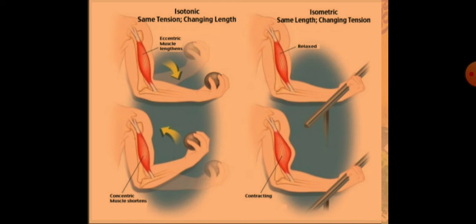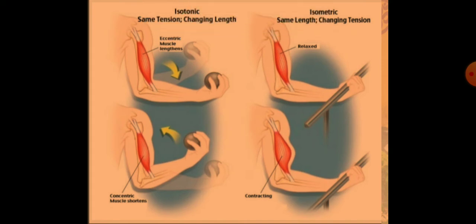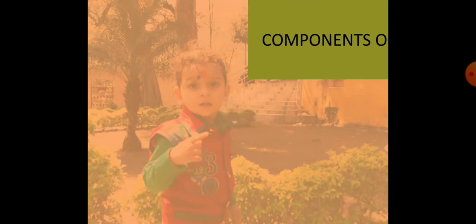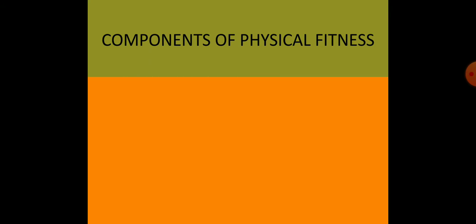We can observe isotonic and isometric strength by how muscles exert force. In isotonic contractions, muscles show the same tension while changing length. In isometric contractions, there is changing tension with no visible movement — muscles are contracting or relaxing without displacement. This concludes our revision of strength; now we move to the next component: speed.